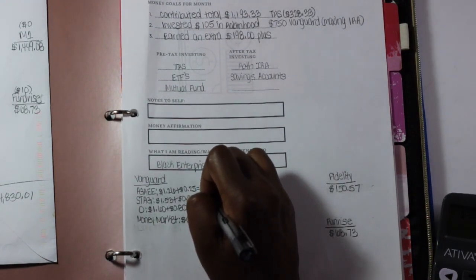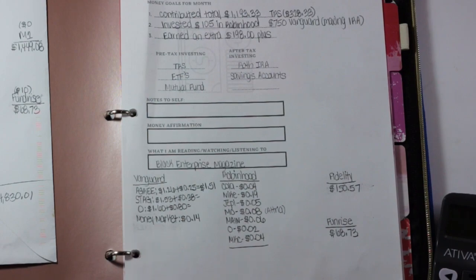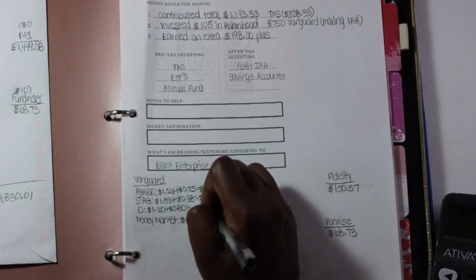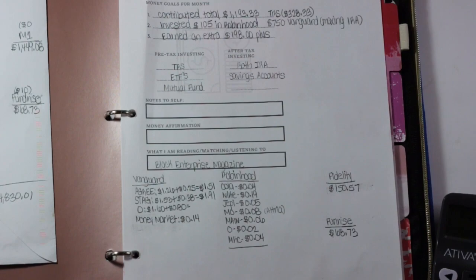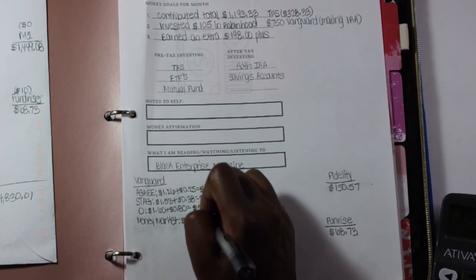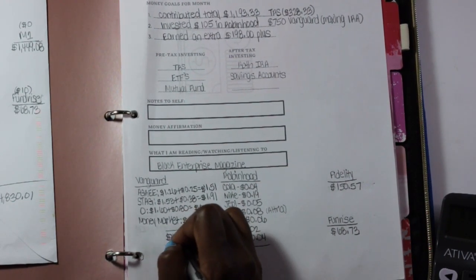So for Vanguard, Agree I earned $1.51, and then for Stag I earned $1.91, and then for O Realty I earned $2.40, and then the money market account was $0.14. So $1.51 plus $1.91 plus $2.40 plus $0.14 is $5.96 for Vanguard.